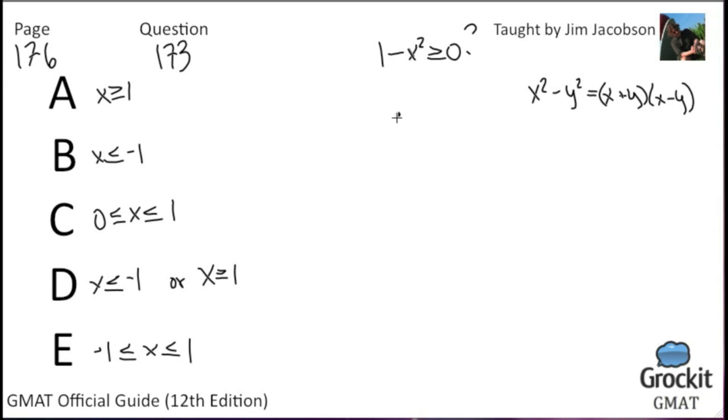Difference of two squares, we can simplify here. So 1 minus x squared, 1 is the square of 1, and x squared is also. So this is the same thing as 1 plus x times 1 minus x is greater than or equal to 0.